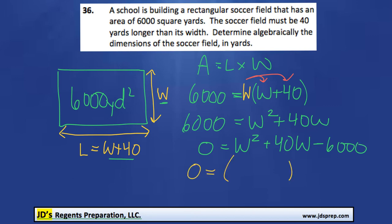So, separate brackets with W's. Okay, we're looking for two numbers that multiply to get us negative 6,000, but add to get us positive 40.